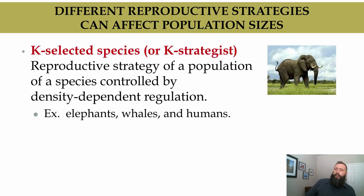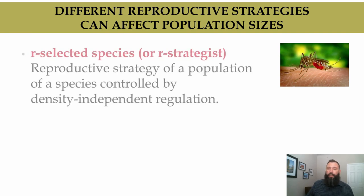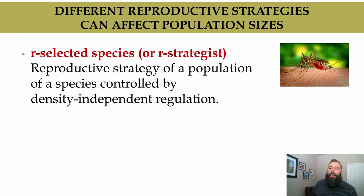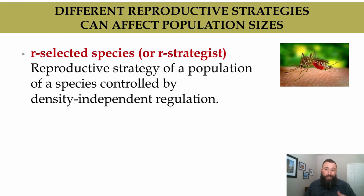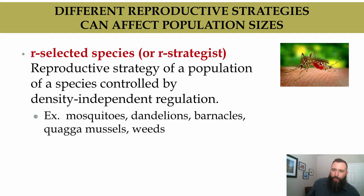Just as some species are controlled by density-dependent regulation, there are also species controlled by density-independent regulation, like mosquitoes. An R-selected species, or R-strategist, follows a reproductive strategy controlled by density-independent regulation. A drought causing a massive die-off of a mosquito population is an example — it has nothing to do with the density of the population; it's just a natural phenomenon. R-selected species include mosquitoes, dandelions, barnacles, quagga mussels, and weeds.